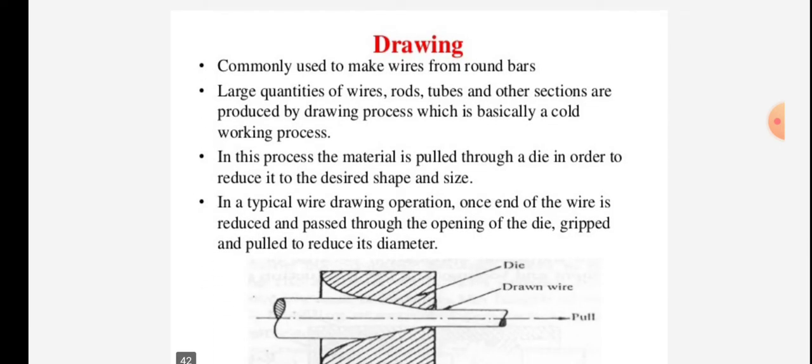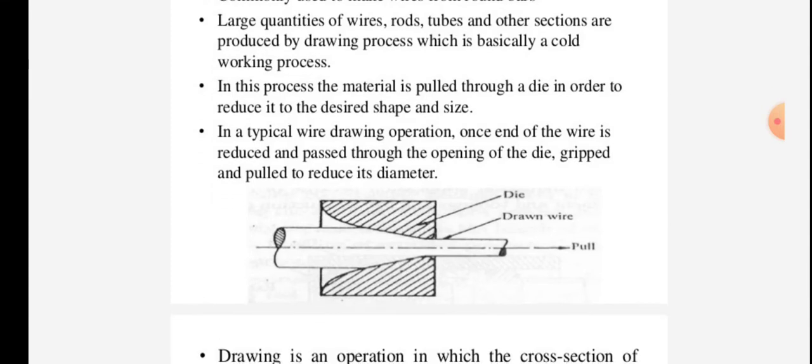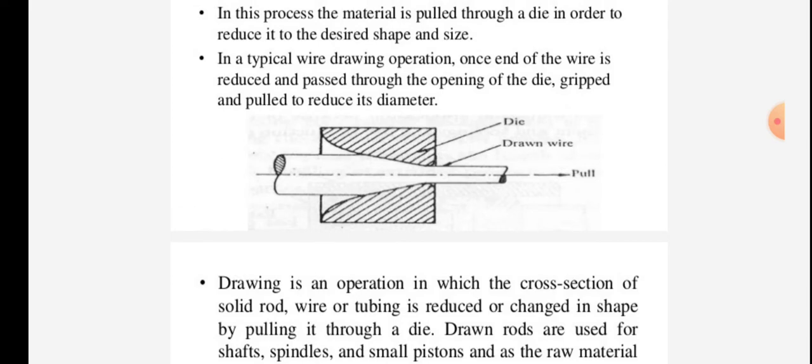Drawing is commonly used to make wires from round bars. Large quantities of wires, rods, tubes, and other sections are produced by drawing process, which is basically a cold working process. In this process, the material is pulled through a die to reduce it to the desired shape and size. In a typical wire drawing operation, one end of the wire is reduced and passed through the opening of the die, gripped, and pulled to reduce its diameter.